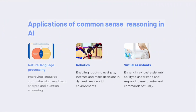Applications of Common Sense Reasoning in AI include: Natural Language Processing — improving language comprehension, sentiment analysis, and question answering. Robotics — enabling robots to navigate, interact, and make decisions in dynamic real-world environments. Virtual Assistants — enhancing virtual assistants' ability to understand and respond to user queries and commands naturally.